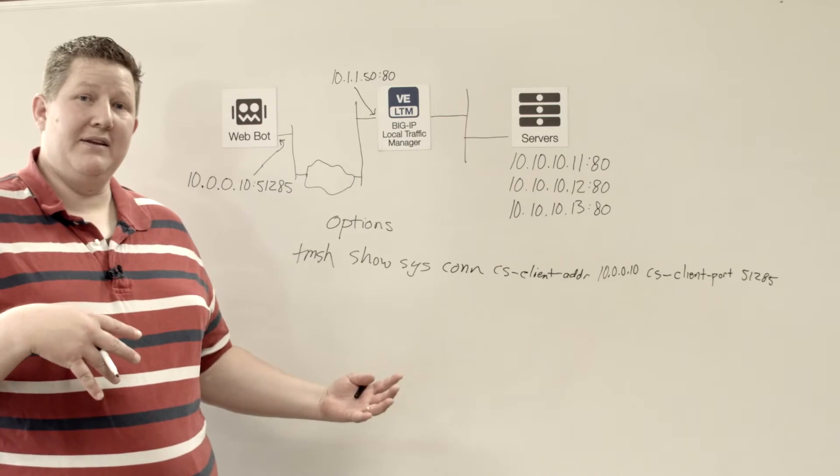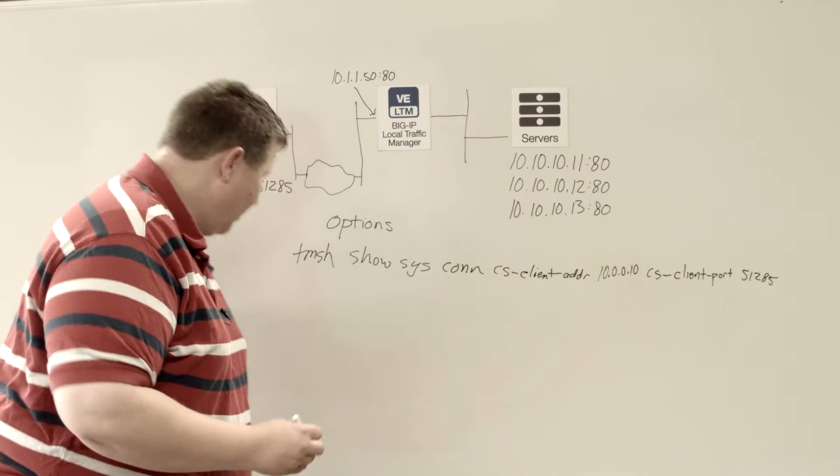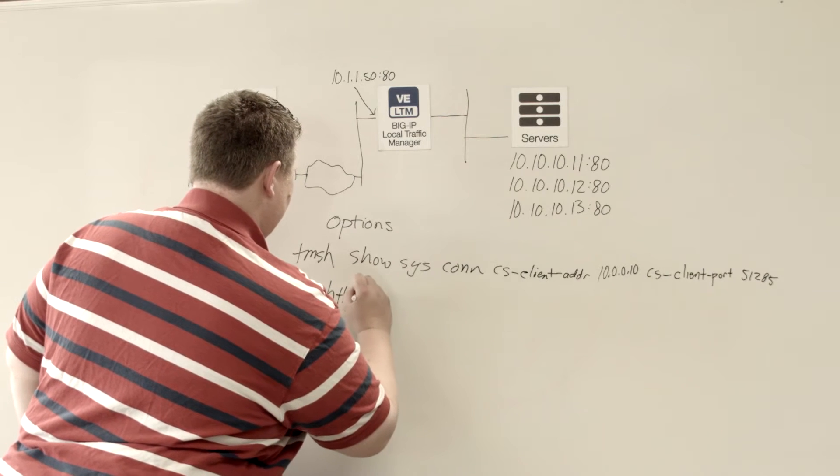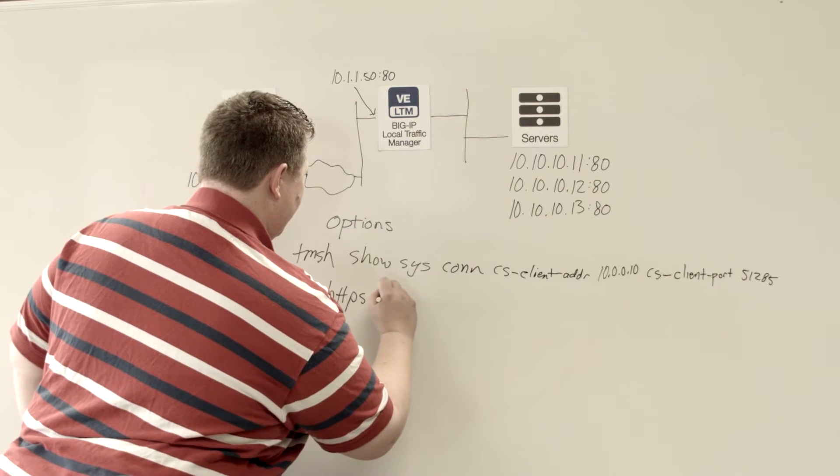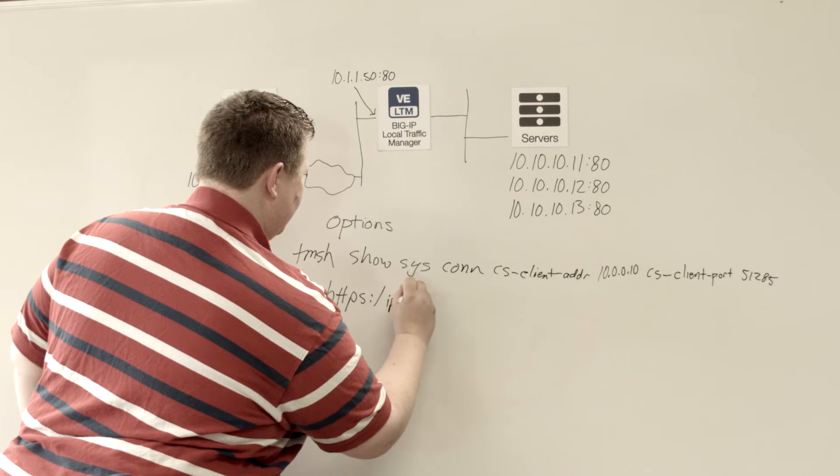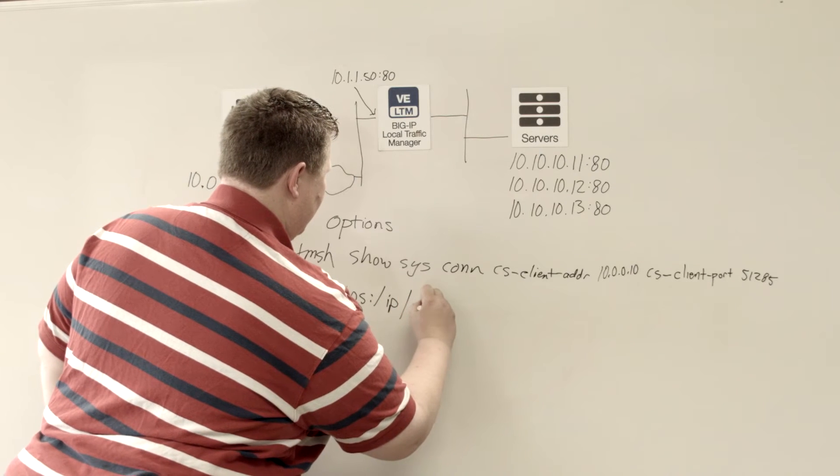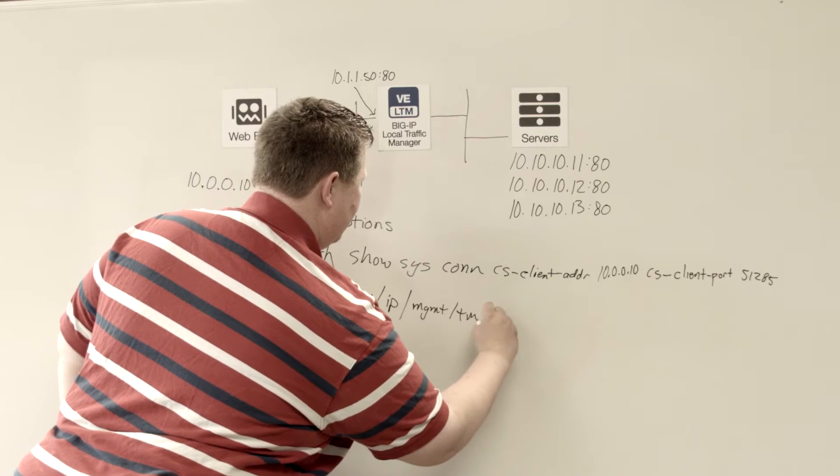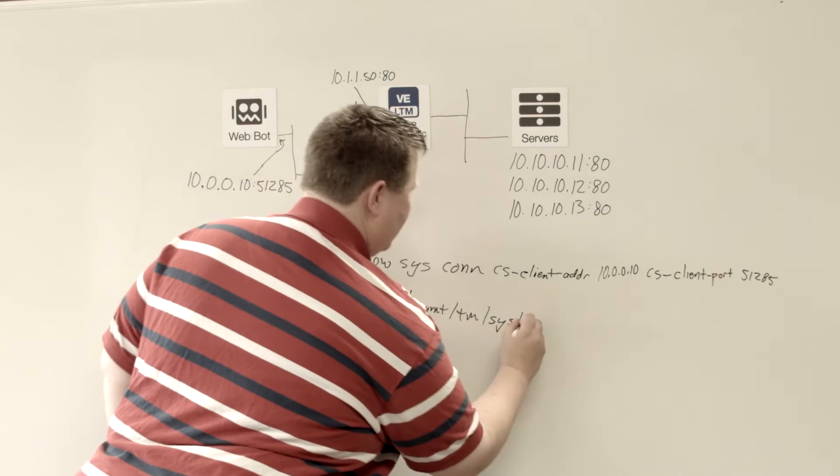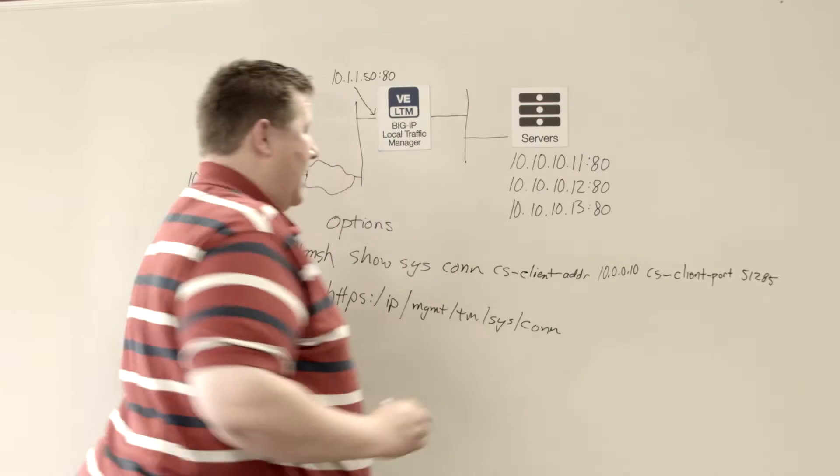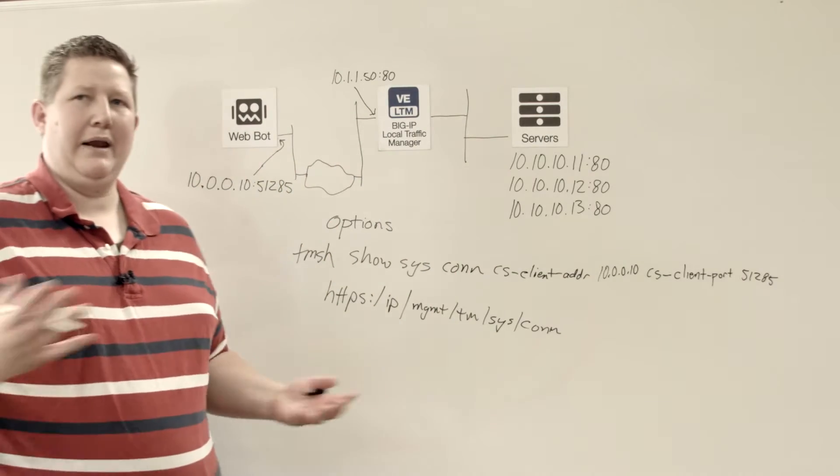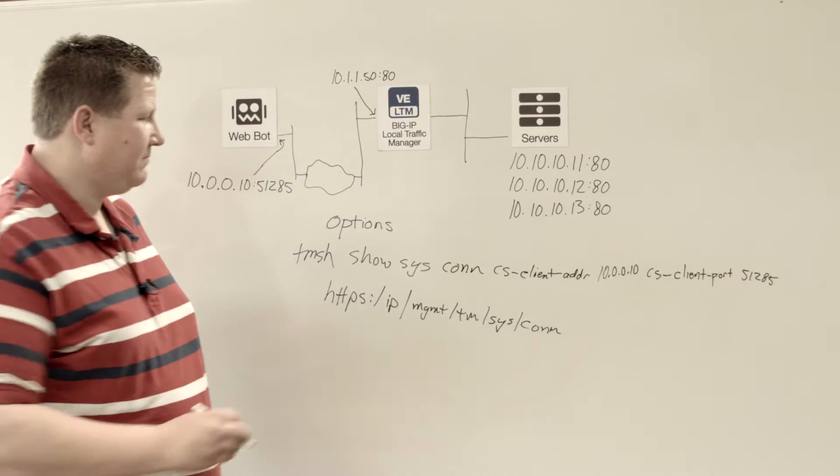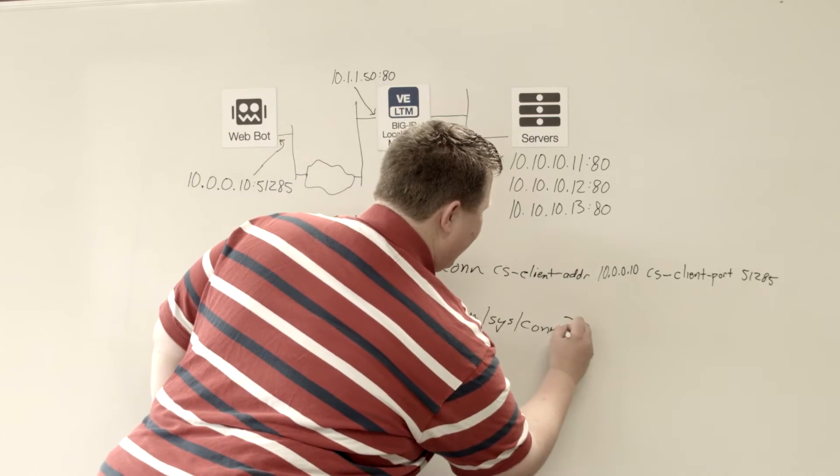Now how do I translate that into the API? Well that is done. You get your base command of your big IP IP, and then management, tm, sys, con. And then from there, you're like, well how do I translate this into an API call? And that's where the query parameters come in for the options.